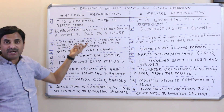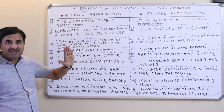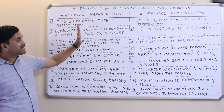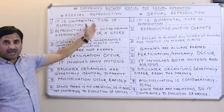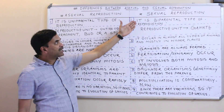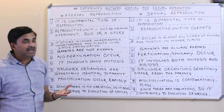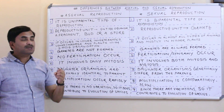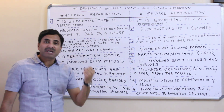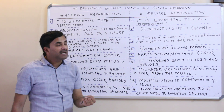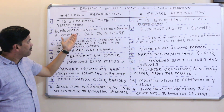First of all, you must know that asexual reproduction is a uniparental type of reproduction, meaning there is no need for two parents — a single parent is involved. That's why it is called uniparental reproduction. In sexual reproduction, it is a biparental type of reproduction, meaning two parents are required: one is the male parent and another is the female parent.